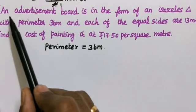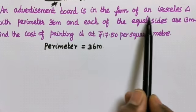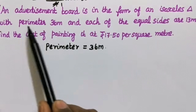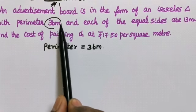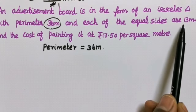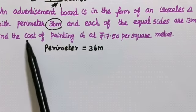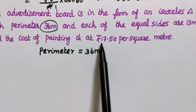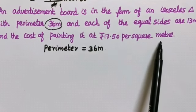5th question. An advertisement board is in the form of an isosceles triangle with perimeter 36 meter and each of the equal sides are 13 meter. Find the cost of painting it at Rs. 17.50 per square meter.